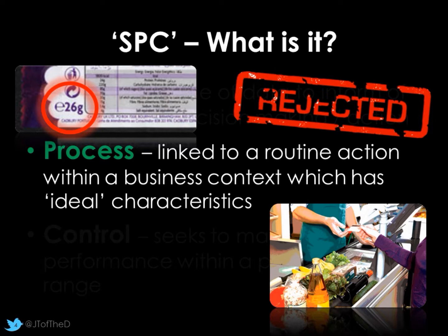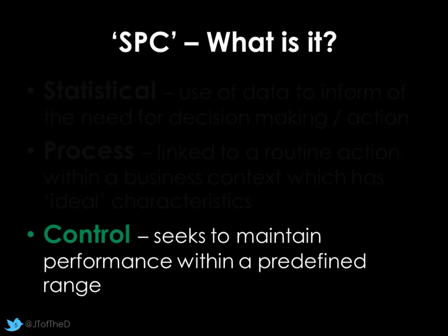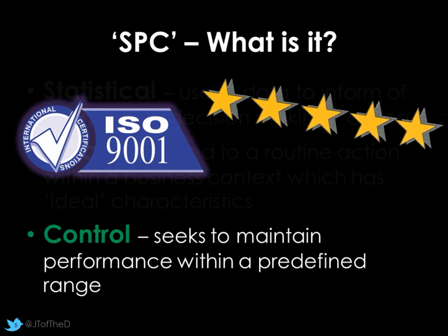SPC can be used in the service industry — the number of customers served per hour, items sold per hour — and could trigger things like training if issues are identified. In manufacturing, it monitors how quickly machinery is working: fast enough to meet orders, but not so fast that quality is compromised. It's linked to control — maintaining predefined acceptable limits. ISO 9001 accreditation will look that things like SPC are in place.